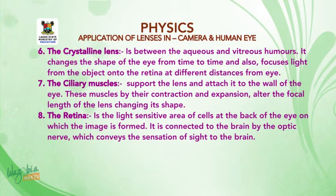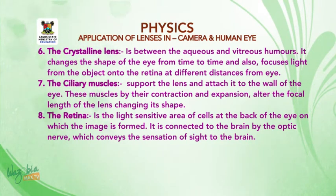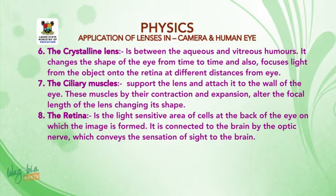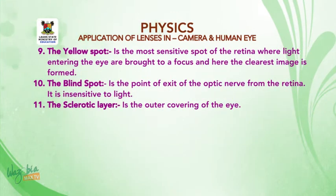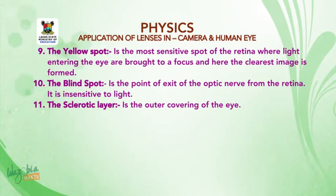Number eight: the retina. It is a light-sensitive area of cells at the back of the eye on which the image is formed. It is connected to the brain by the optic nerve which conveys the sensation of sight to the brain. Number nine: the yellow spot. This is the most sensitive spot of the retina where light entering the eye is brought to a focus, and here the clearest image is formed.